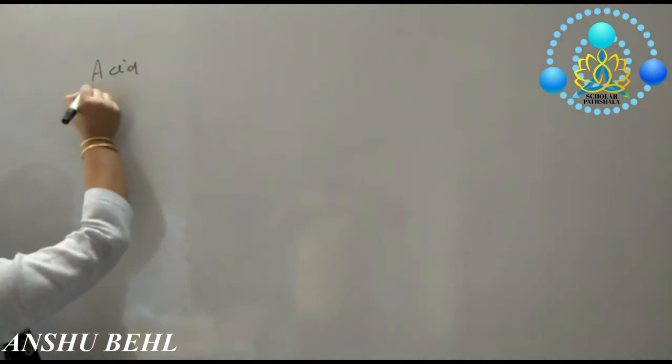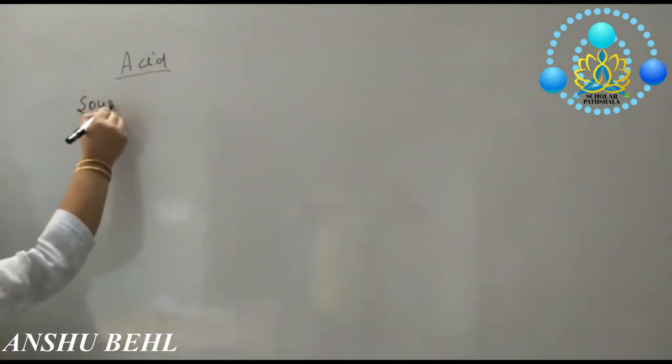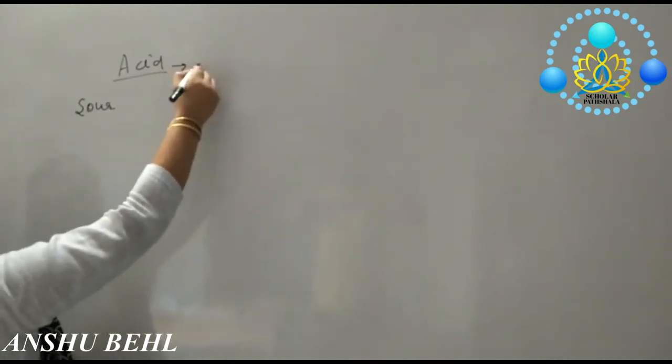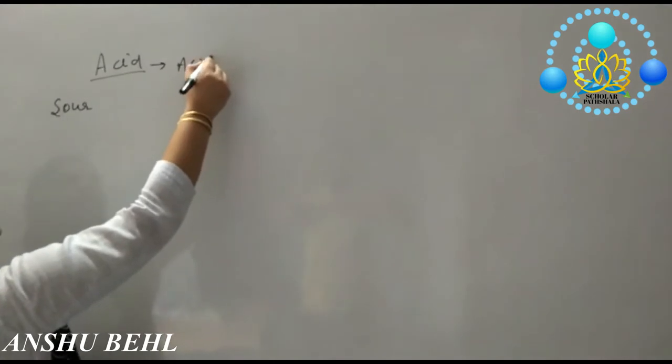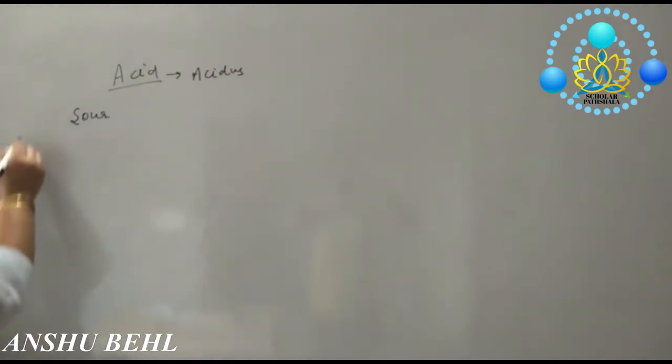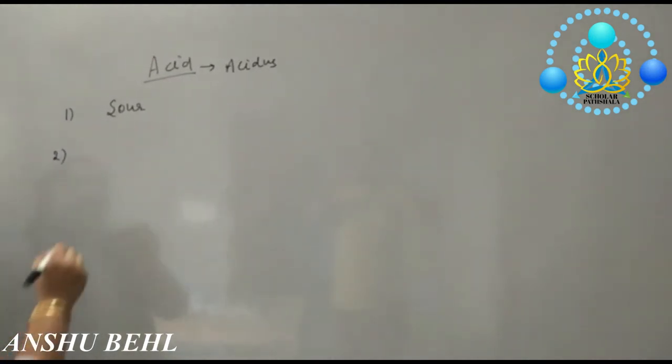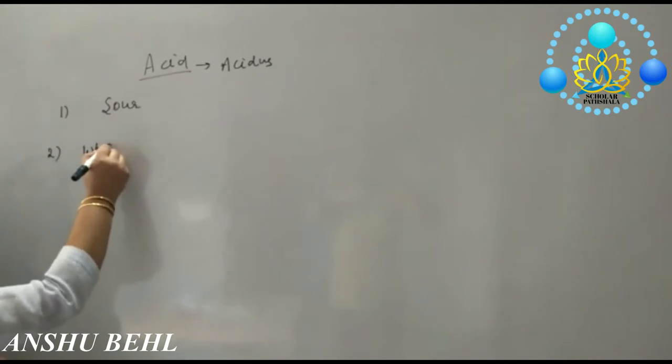What is an acid? Acid is a substance which is sour in taste. Actually, the word acid comes from the word acidus, acidus means sour in taste. Second thing is acid is a substance which in aqueous solution can give H positive ions.